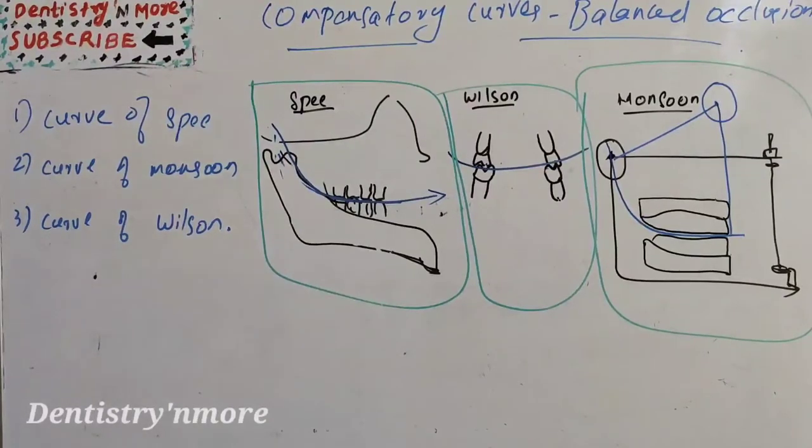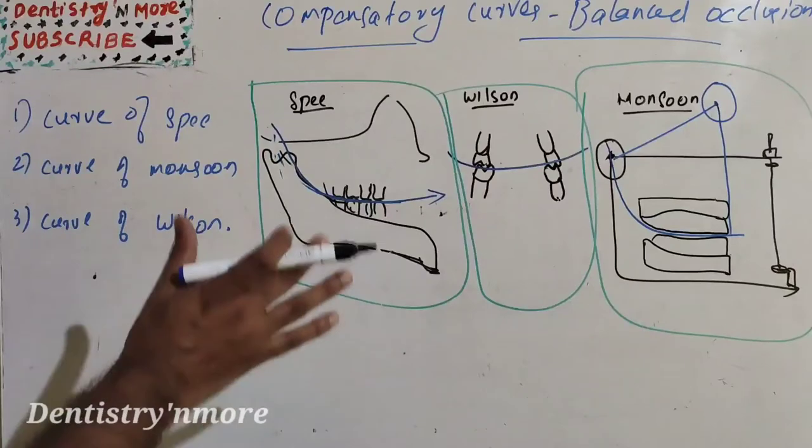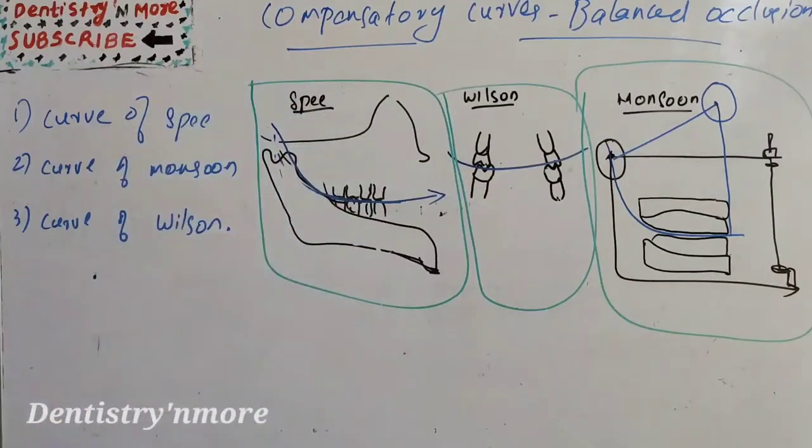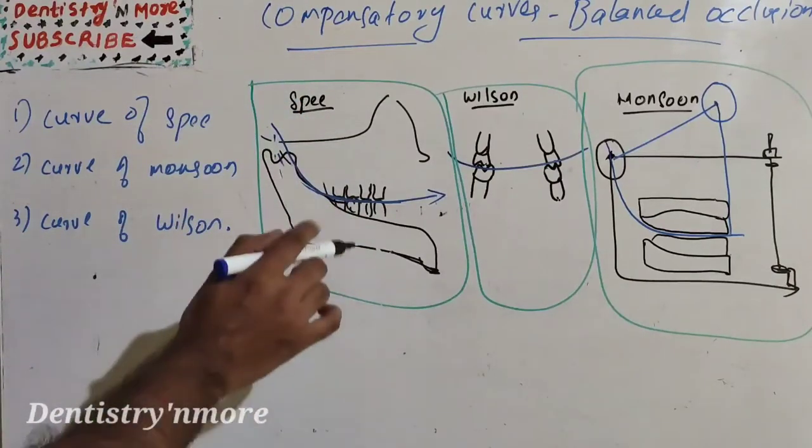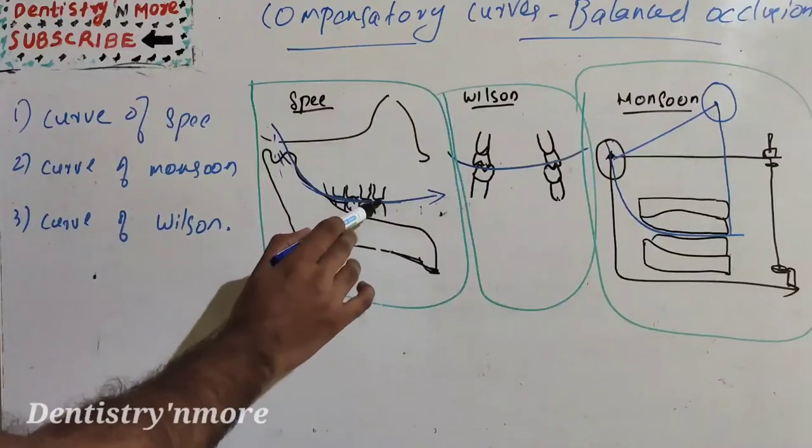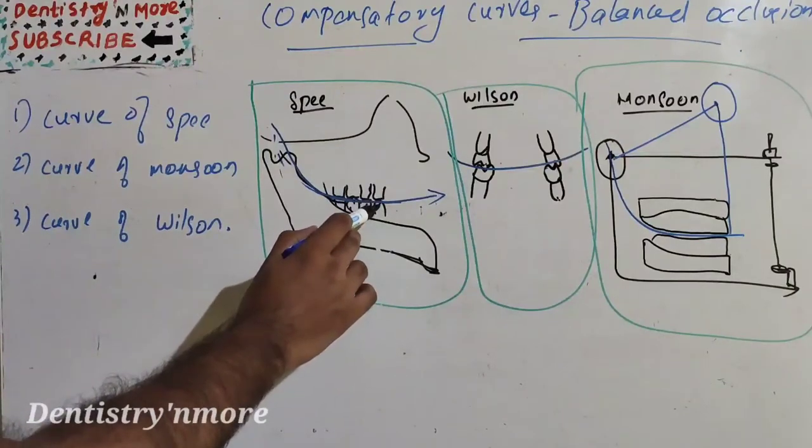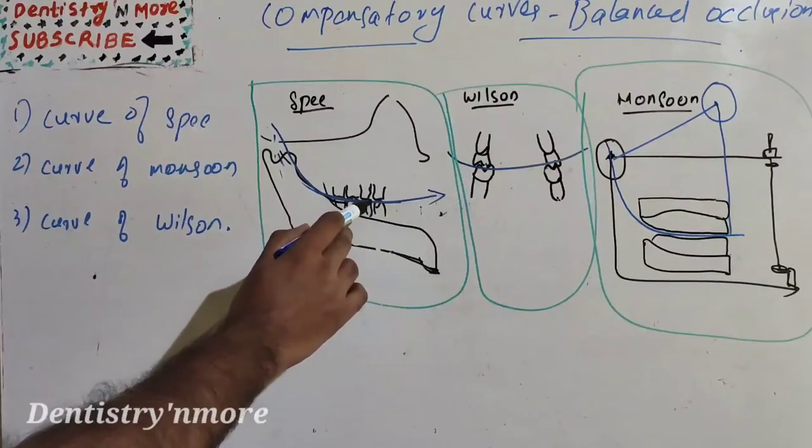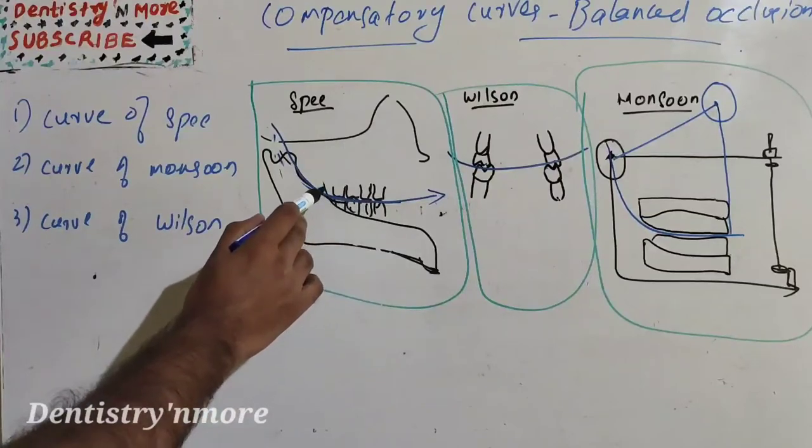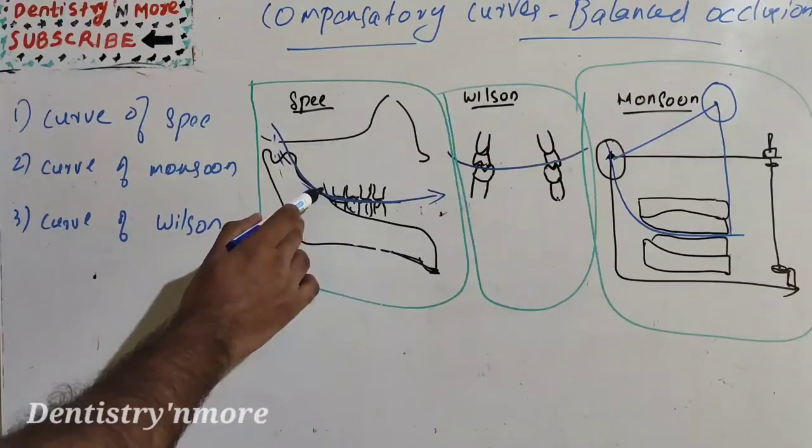We'll start with the curve of Spee. It is an anatomic curve established by the occlusal alignment of the teeth as projected onto a median plane. It begins from the cusp tip of mandibular canine, then following the buccal cusp tips of the premolars and molars and continuing with the anterior border of the ramus.